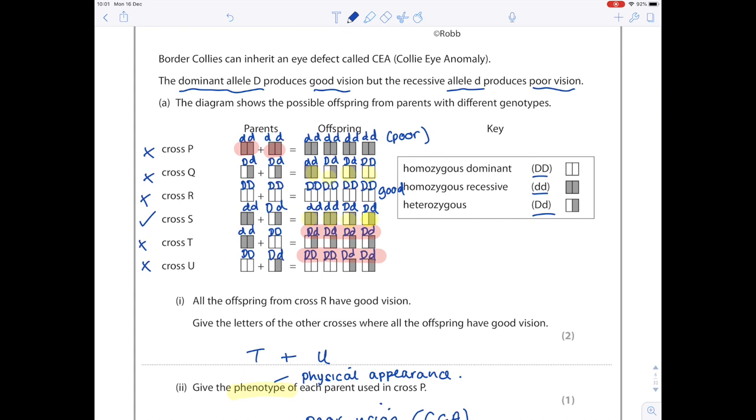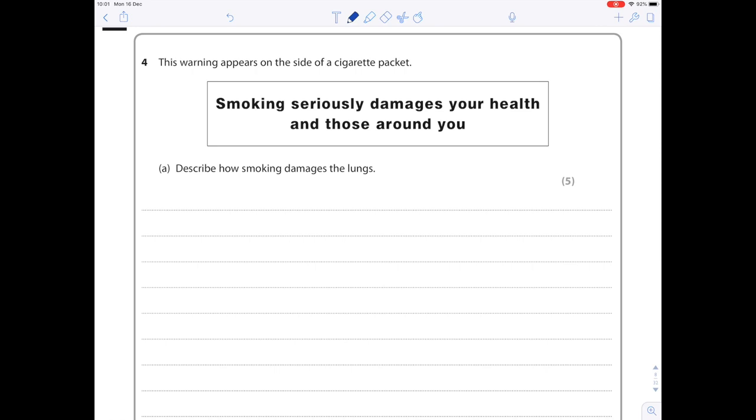Let's just touch on this question. This warning appears on the side of a cigarette packet: 'Smoking seriously damages your health and those around you.' Describe how smoking damages the lungs. Okay, so five-marker. Luckily we don't have to be too careful with our English, just a list of really valid key points. Don't keep repeating yourself. I'll make a few notes up here about lungs. We're looking at lung cancer, potentially bronchitis. I know there are cilia lining the trachea - could cause issues there. I know of a really horrible lung disease called emphysema.